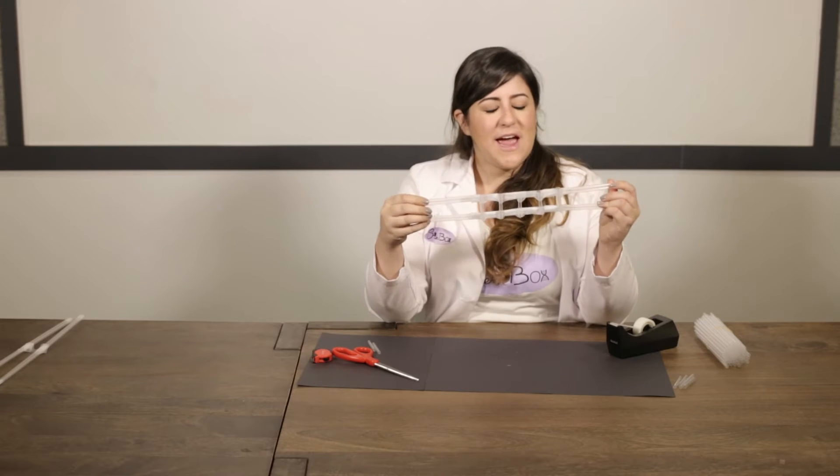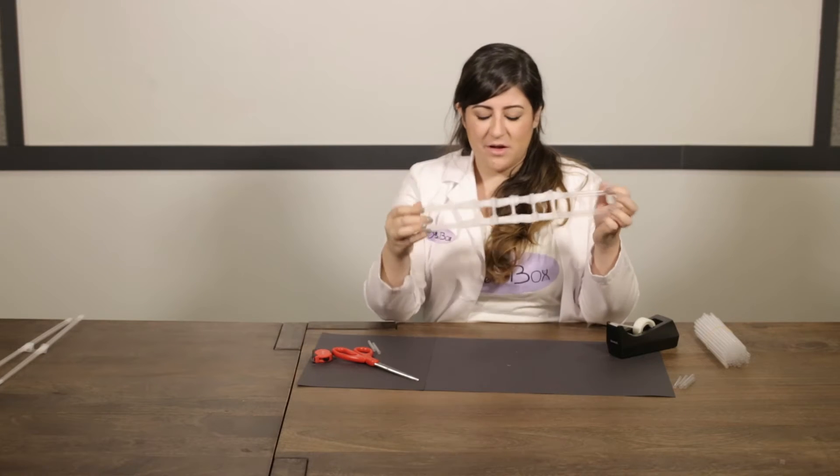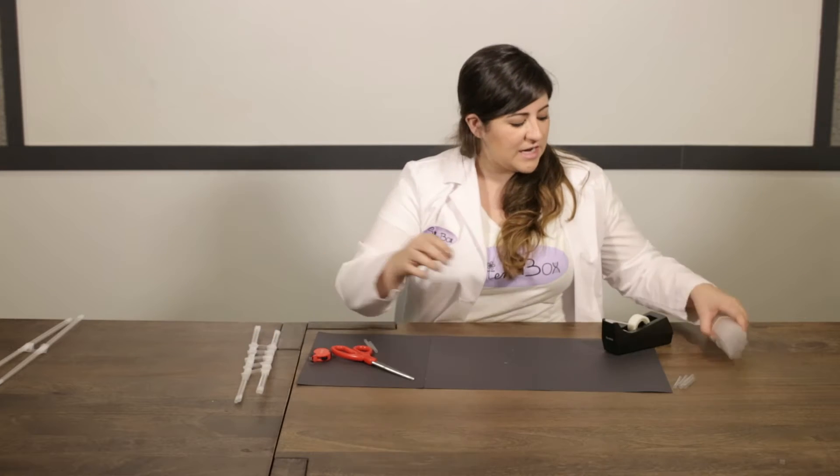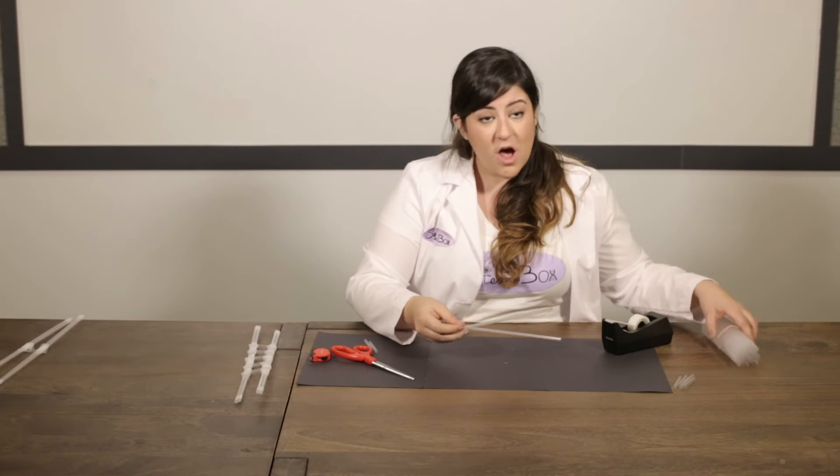And voila! We have our bottom beam of our bridge. So the next step we're going to do is put this off to the side and we are going to cut our top truss.